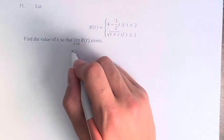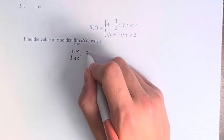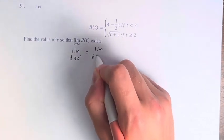Right, what does it mean for it to exist? That means that the limit as t approaches 2 from the left equals the limit as t approaches 2 from the right.